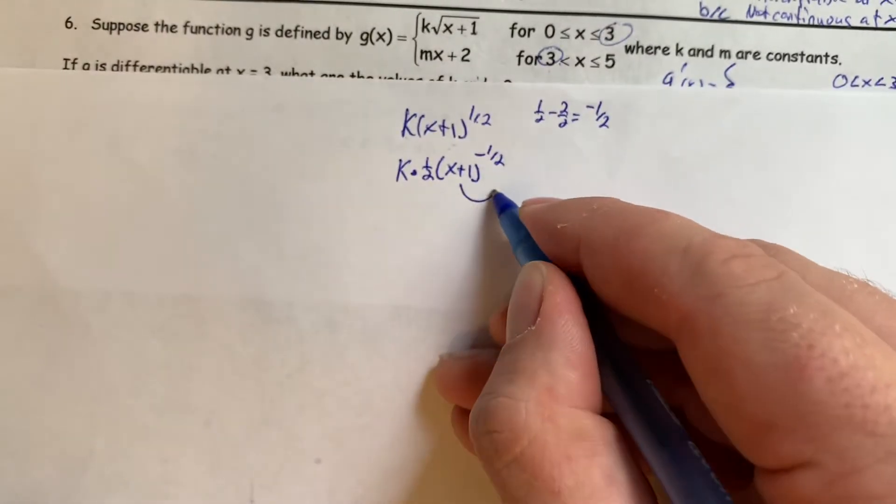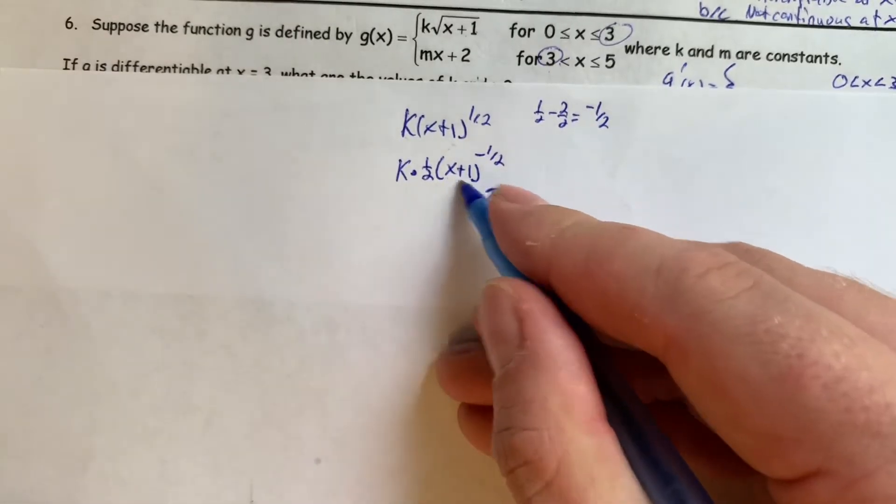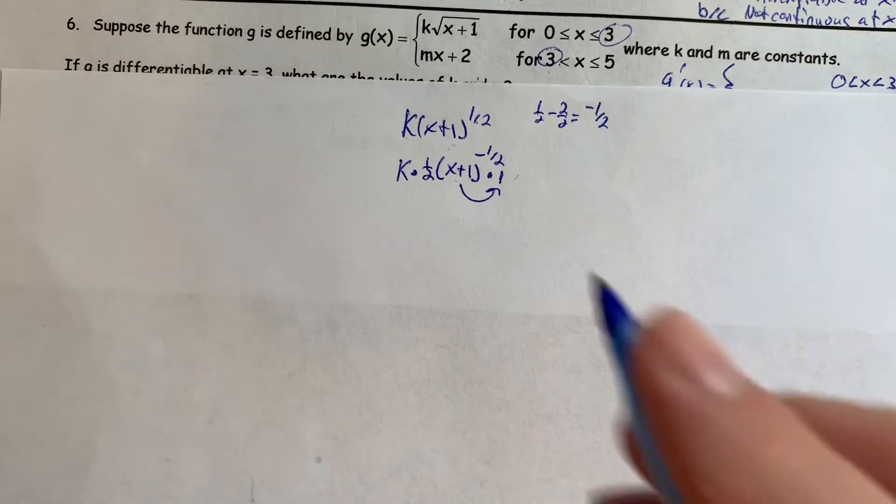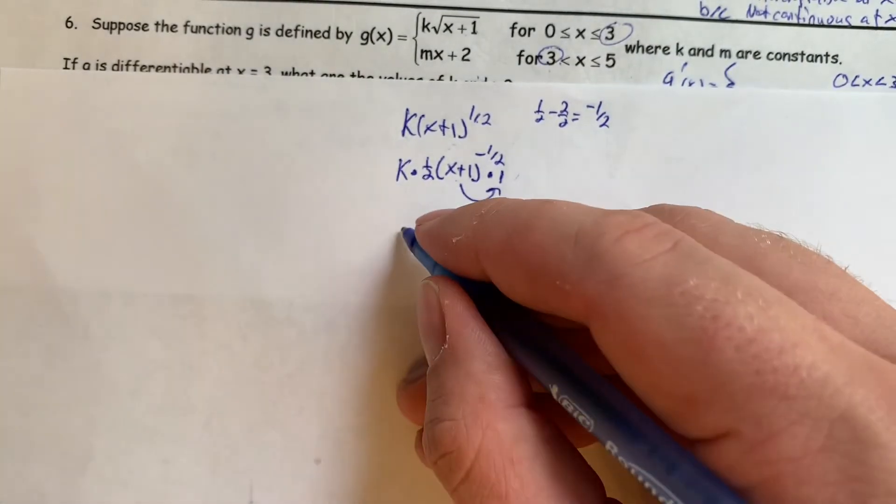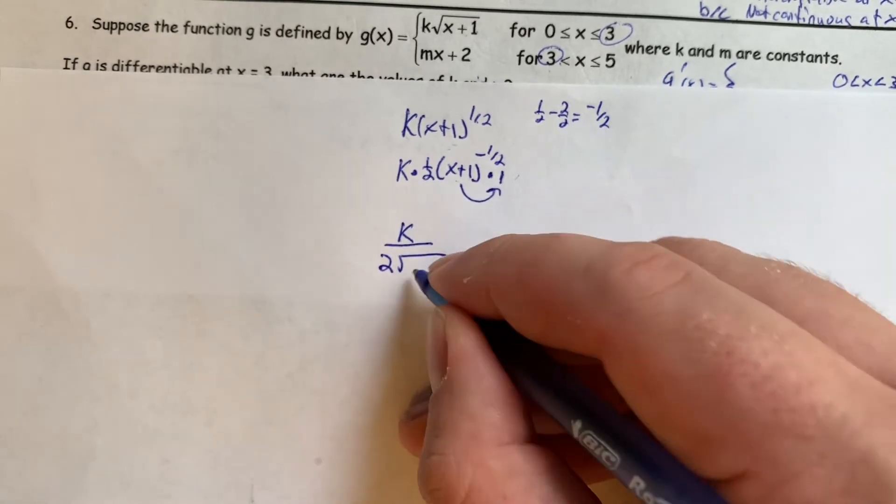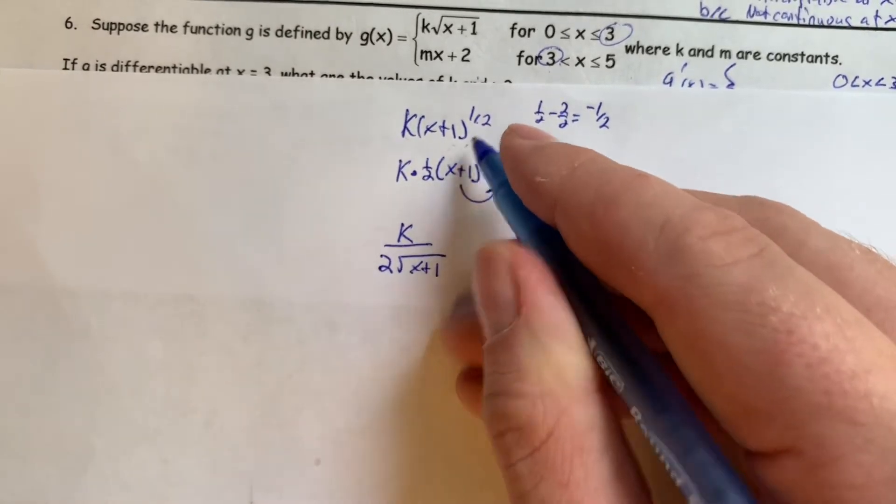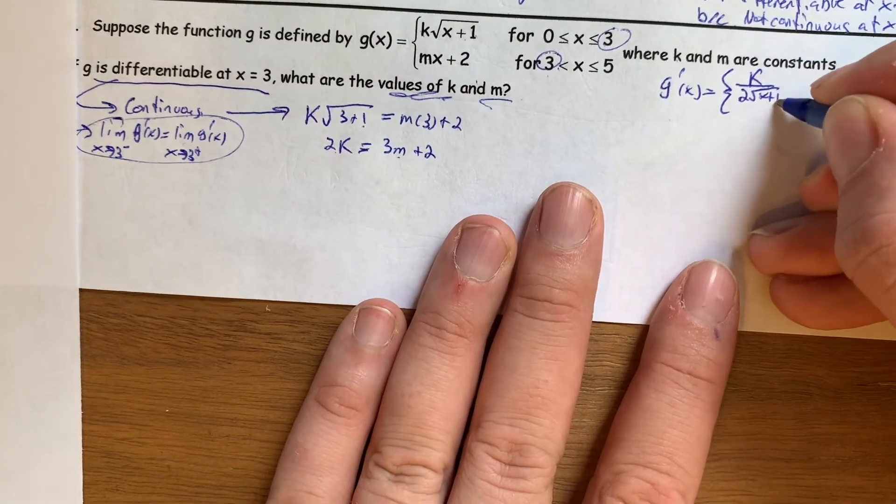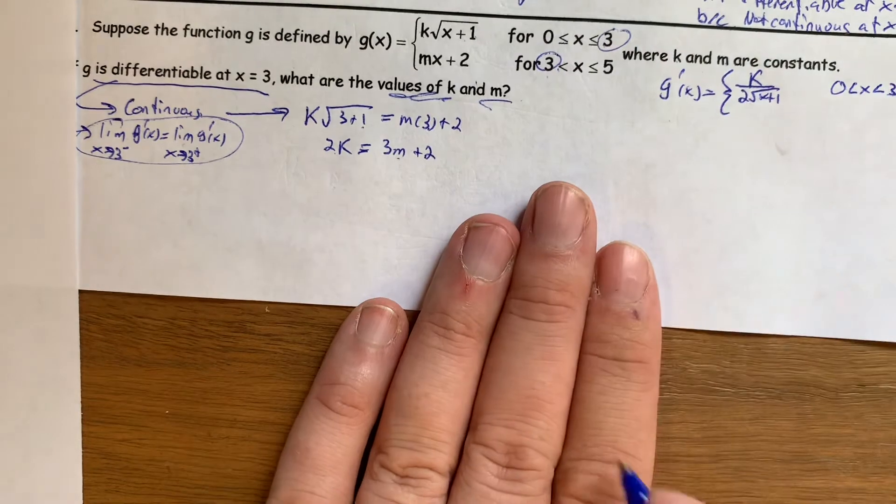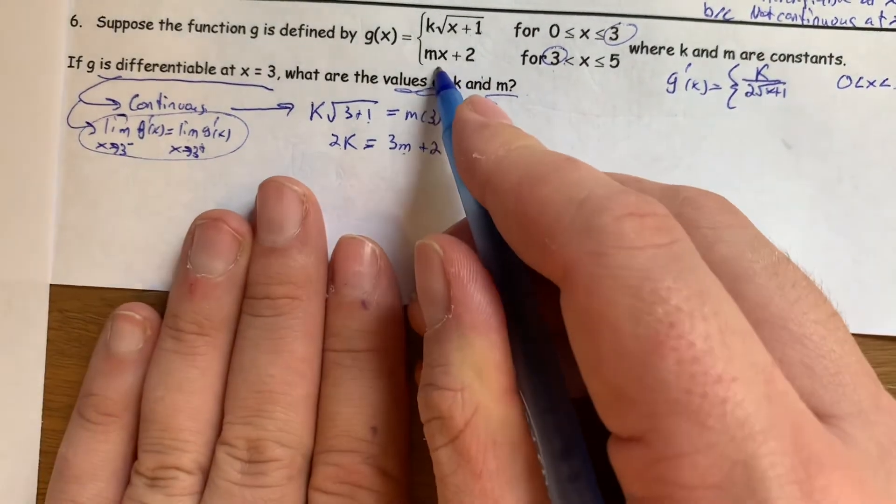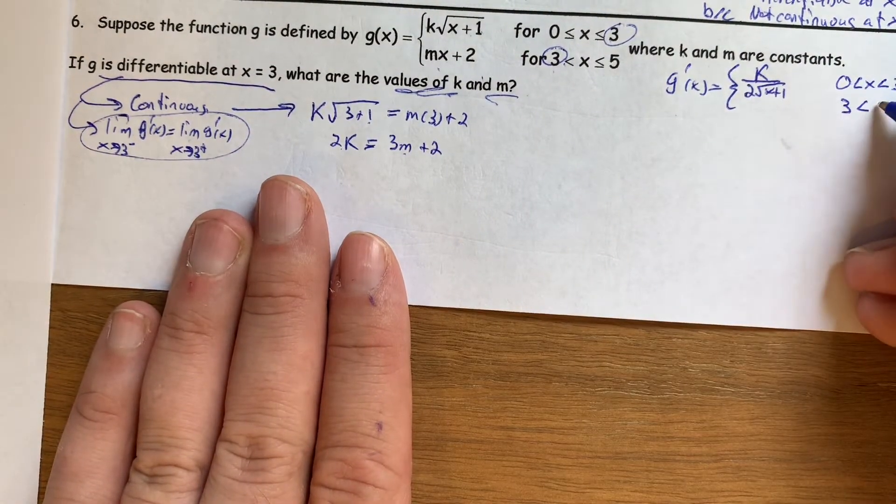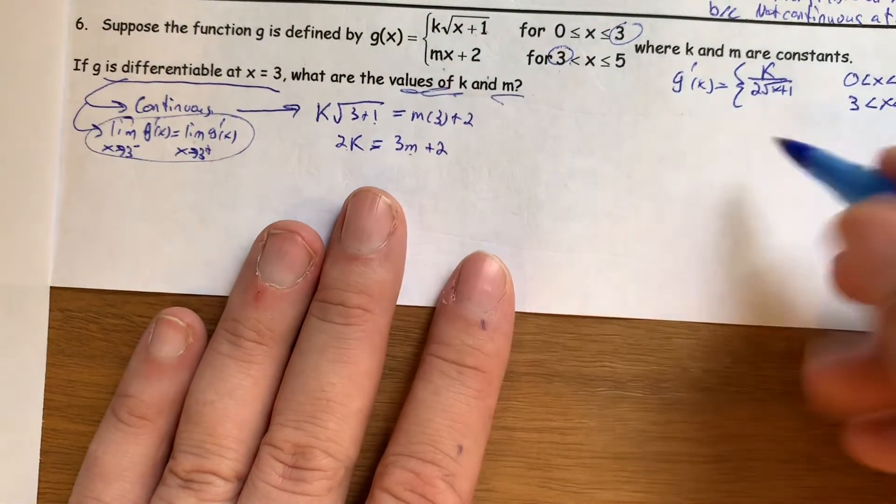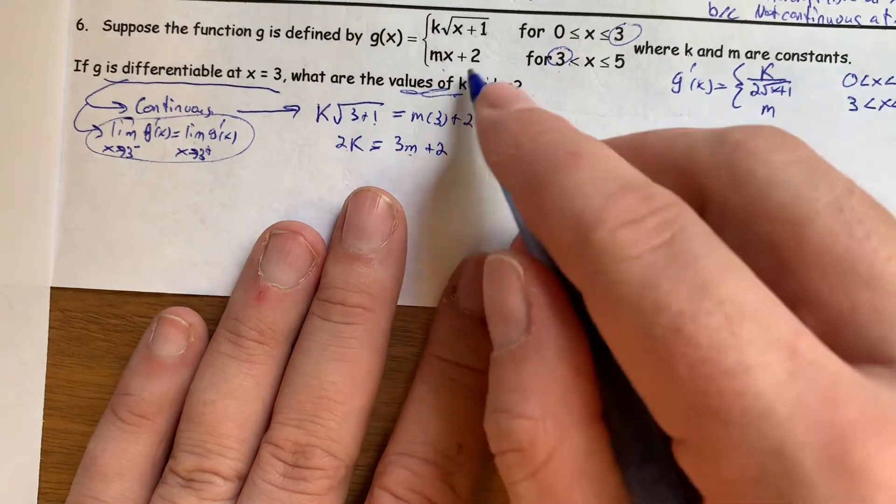But it was a chain rule, so I also needed to do times the derivative of the inside. Now the derivative of the inside here is just 1 here, so it's not going to do anything, but it is something we need to look out for. So let's simplify this. This is k over 2 square root of x plus 1. So that's the derivative when x is to the left of 3, between 0 and 3. And the derivative when we're between x is 3 and x is 5 will be the derivative of this function. Now m is a constant, so the derivative of mx is just m and the derivative of 2 is 0.